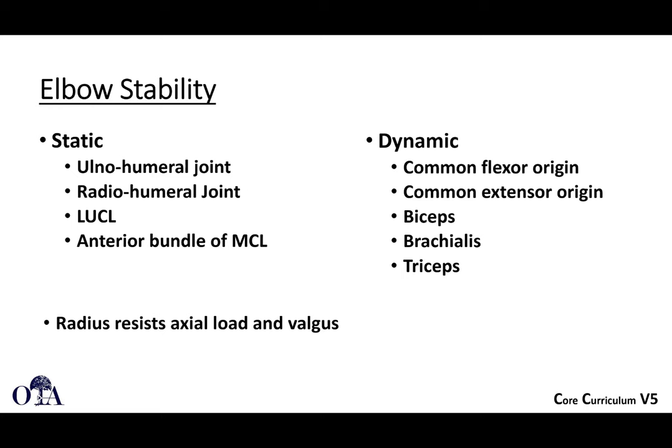Stability involves static stabilizers — the ulnohumeral joint, radiohumeral joint, lateral ulnar collateral ligament, and anterior bundle of the MCL — and dynamic stabilizers including the common flexor origin, common extensor origin, biceps, brachialis, and triceps. The radius helps resist axial load and valgus stresses. In posterolateral rotatory instability, with axial load and valgus, the radius can sublux due to ligament incompetence. In terrible triad injuries without an intact radial head, you need a reconstructed head or possibly a replacement to resist axial load, valgus, and instability.